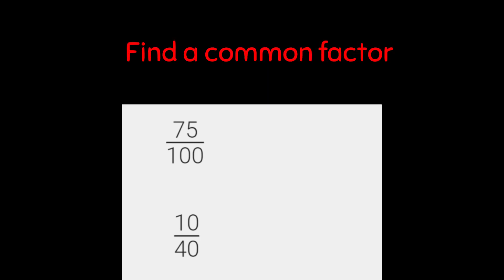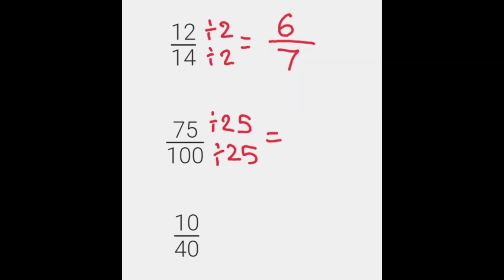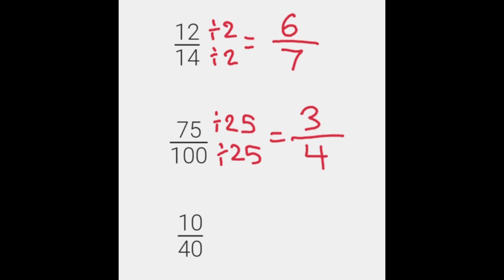We're going to do seventy-five over a hundred. We're going to divide seventy-five and a hundred by twenty-five. Whatever you do the bottom, you must do the top. How many times does twenty-five go into seventy-five? It goes in three. How many times does twenty-five go into a hundred? It goes in four. So three quarters is equivalent to seventy-five over a hundred.